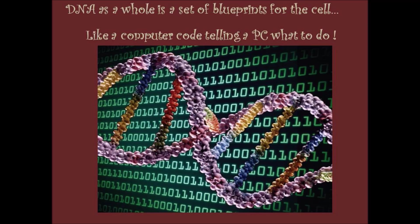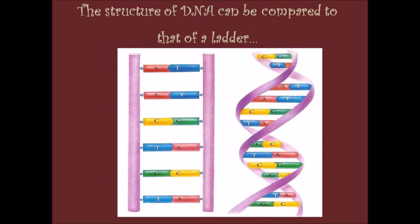A good analogy for DNA as a whole is a set of blueprints for the cell, or computer code telling a PC what to do. It is written in a special alphabet that has only four letters. Unlike a book or computer screen, DNA isn't flat and boring — it is a beautifully curved ladder. We call this shape a double helix. This model of the DNA was proposed by Watson and Crick in the year 1953.